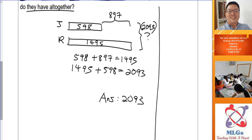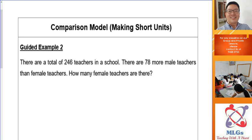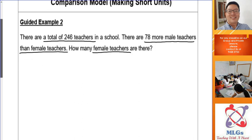Let's look at another example. This time we are going to learn how to make short units. Let's read the question: there are a total of 246 teachers in a school. There are 78 more male teachers than female teachers. How many female teachers are there? Again I see 'more than,' so I will think of the comparison model.